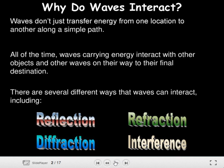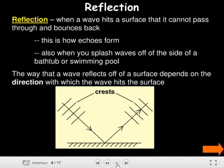There are several different ways that waves can interact, including reflection, refraction, diffraction, and interference. Reflection occurs when a wave hits a surface it cannot pass through and bounces back. This is how echoes form. It also happens when you splash waves off the side of a bathtub or swimming pool.